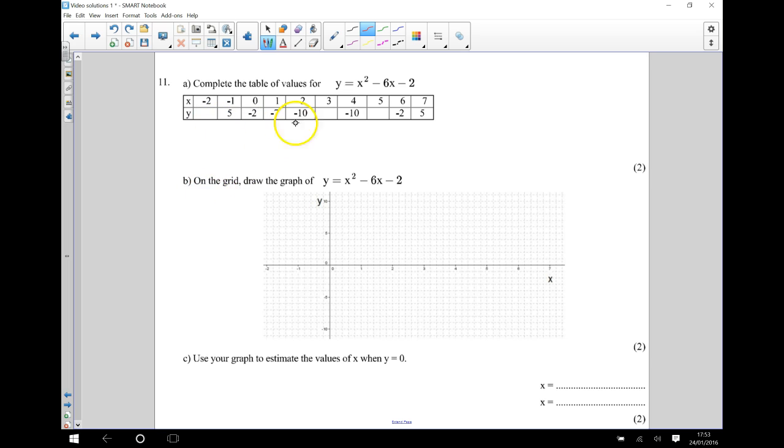We then need to, once we've completed this table, draw the graph of y is equal to x squared take away 6x take away 2 onto this here. And then we're going to use the graph to estimate a value. So to start with we want to fill in the values into this table.